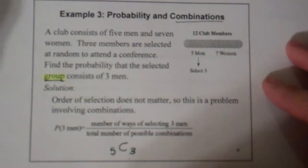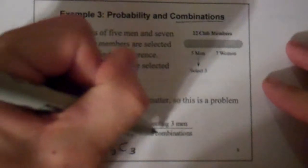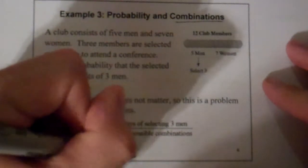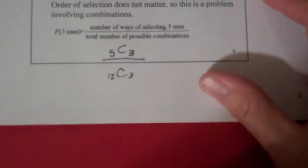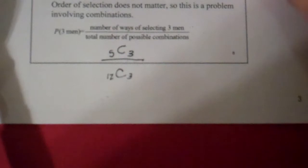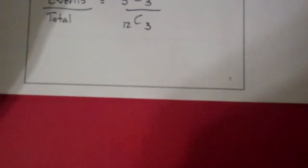And what's the total number of possible combinations? Well, I'm still choosing three, but instead of it just being men, it's going to be out of the 12 women. So I'm going to have this slightly different idea. My events are going to be five choose three for the number of possible men versus the total, which is 12 choose three out of all 12 members.